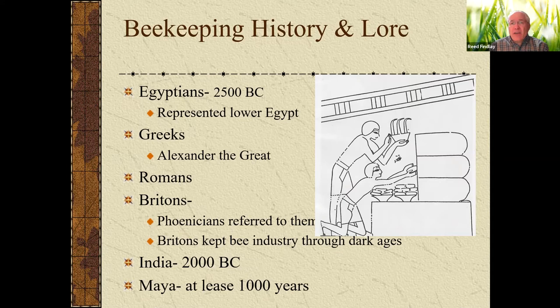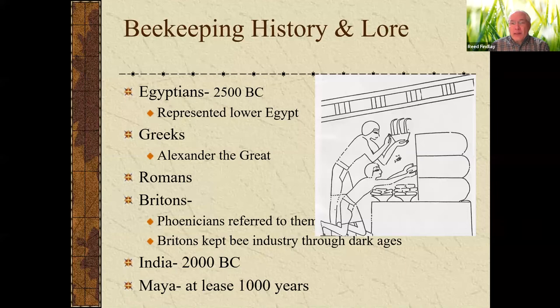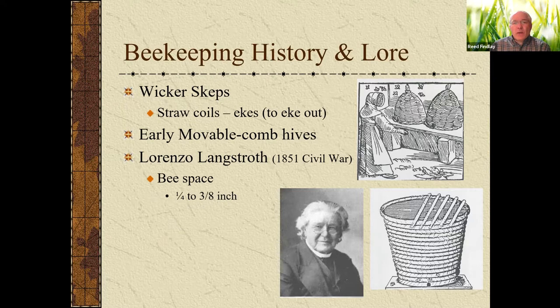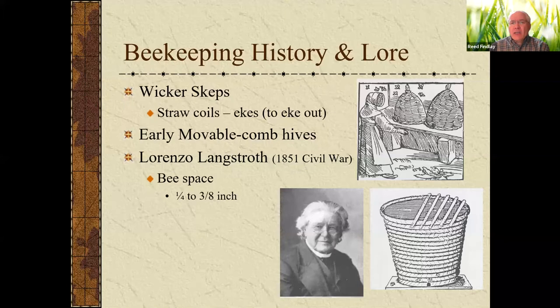The Britons eventually started out with honeybees and became very adept at it. During the dark ages, the Britons kept the bee technology going — the British islands were even referred to as the 'honeybee islands.' Also during the same time around 2000 BC, India and even the Mayans kept honeybees. The way we used to keep bees was in wicker skeps, where each one of those different coils was called an 'eek' — that's where we get the term 'to eek out a living.'